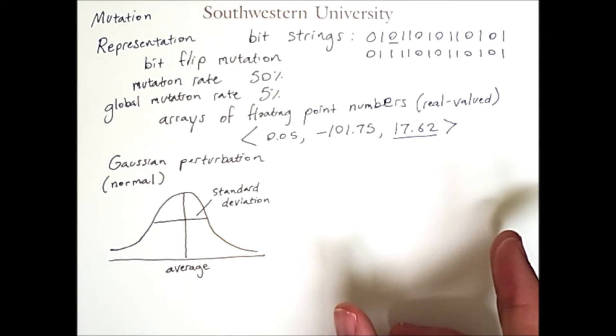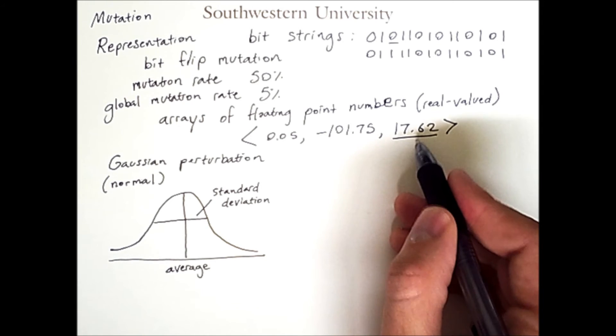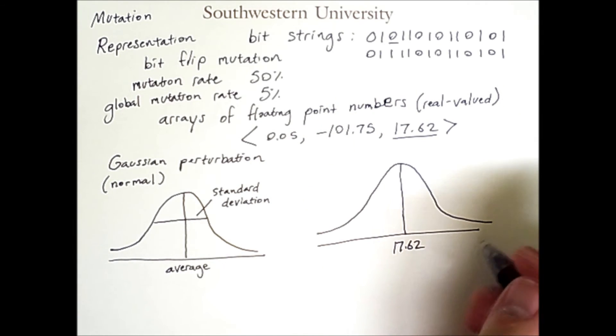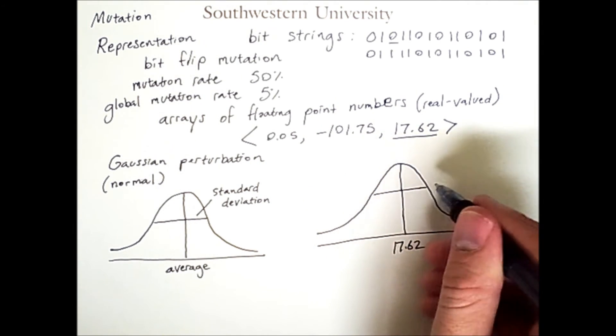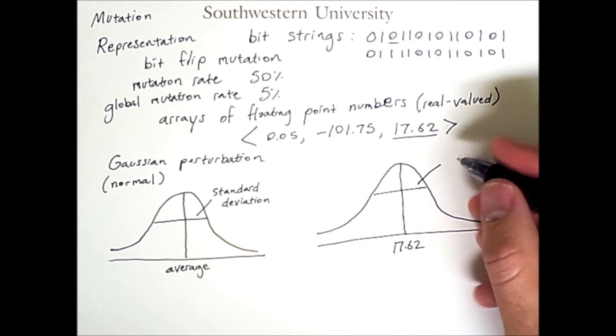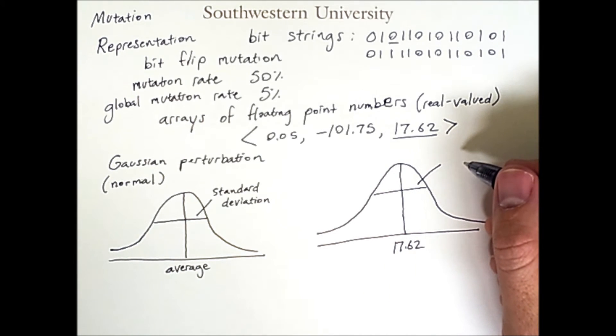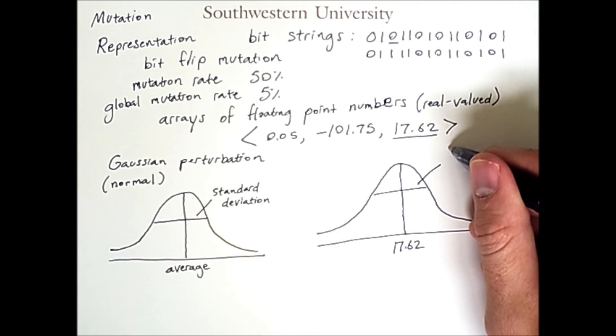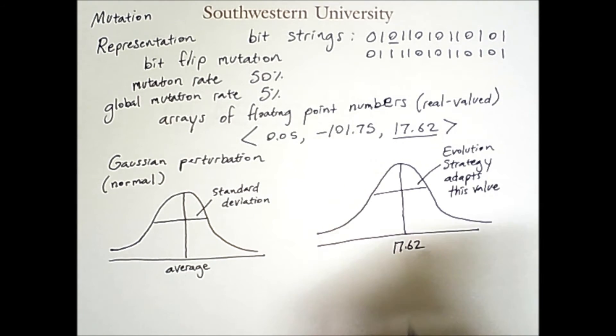So, what we do is we make this value be the average of a Gaussian. We also need to set the standard deviation, and this can be set based on the problem you are solving, although a particular method known as an evolution strategy will adapt this value to best suit the needs of the search process.